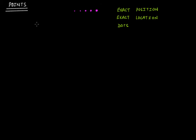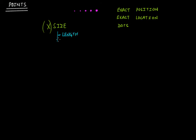But when we say dots, we mean that they don't have any size. You can't say that these dots have some size; we can't say that points have some size. They don't have size. By that we mean they don't have length and they don't have width.